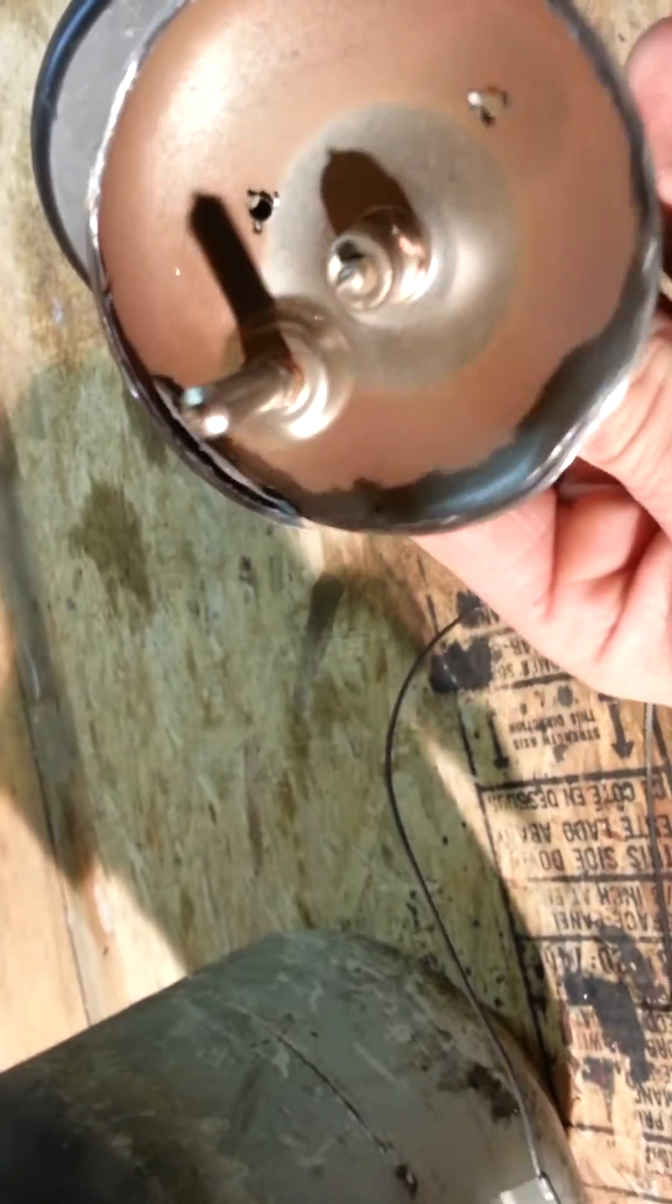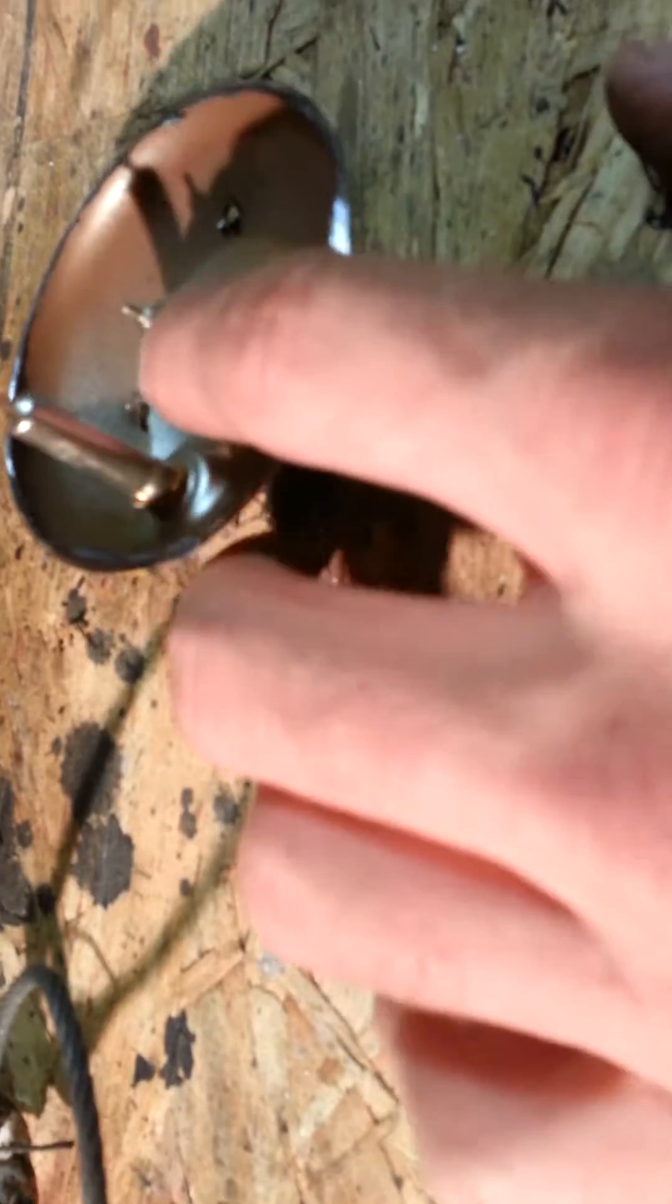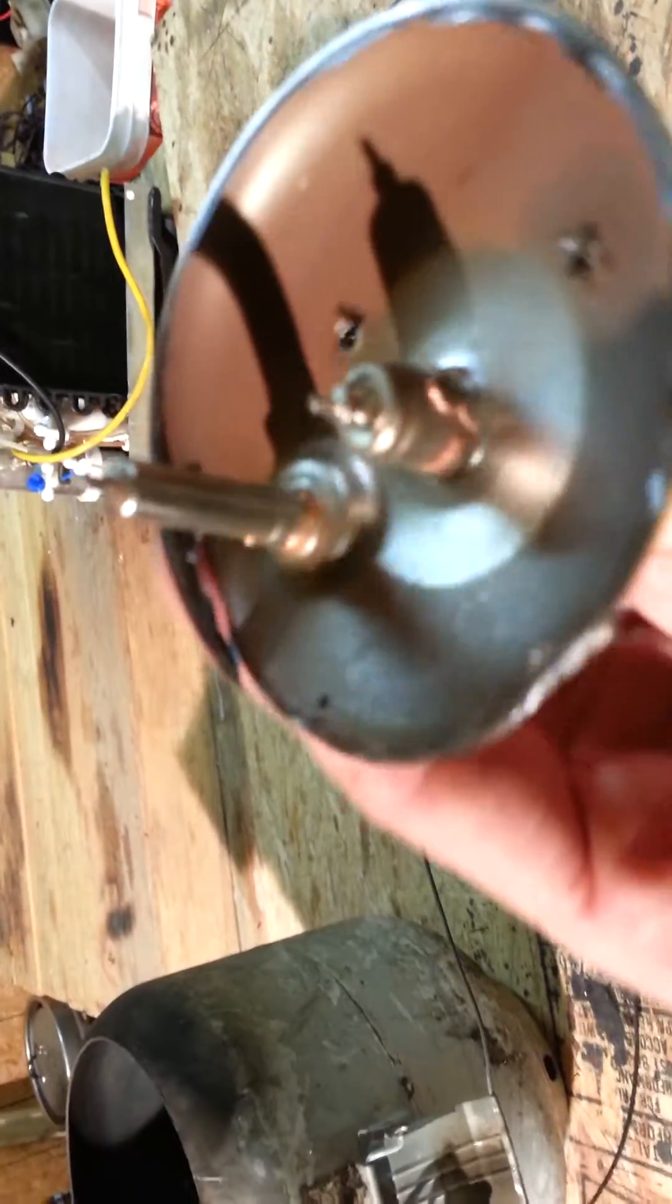These two check valves both have a purpose. This first check valve here, the smaller one, is to keep gas from an oxygen tank or some other source from entering this tank so you don't create an explosion hazard.